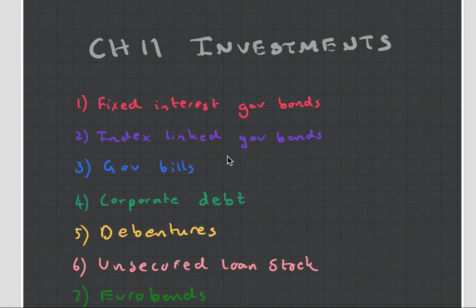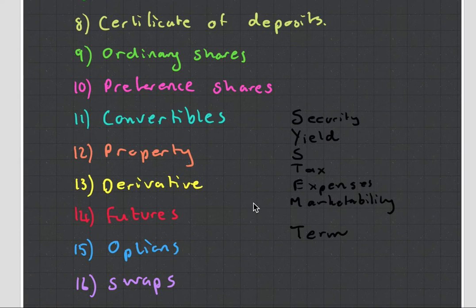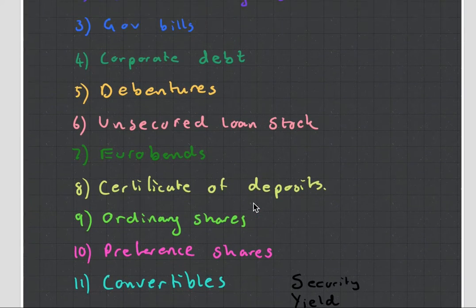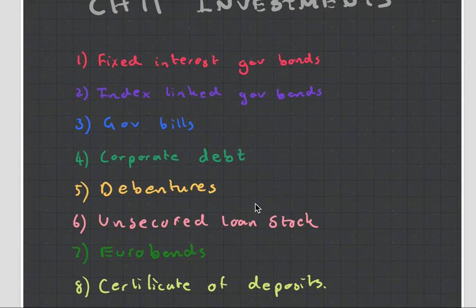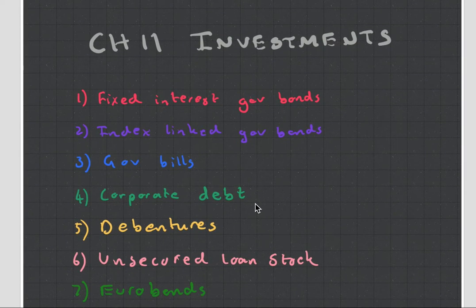Hey guys, it's MJ, the student actuary, and this is chapter 11, which is investments for subject CT1. In this chapter, I'm not going to go in too much depth. This video is going to look at 16 different types of investments and I'm just going to give you a very quick explanation on each one. There are lots of resources on the internet if you want to go further, or you can see my CA1 videos where I also talk about them in more depth.